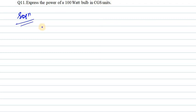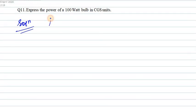Hello everyone, let's start with question number 11 of HC Verma. In this question, express the power of a 100 watt bulb in CGS units. We are given power, that means P in this case is 100 watt.